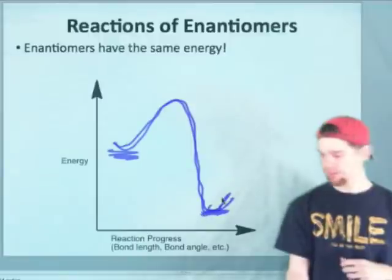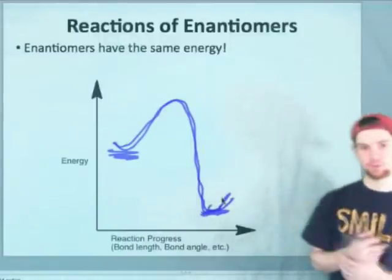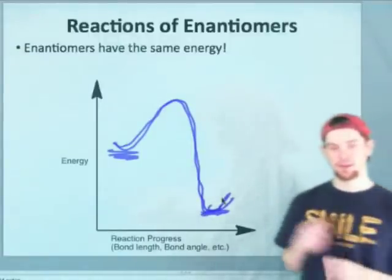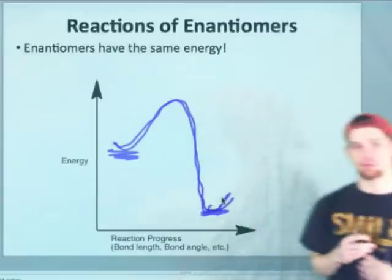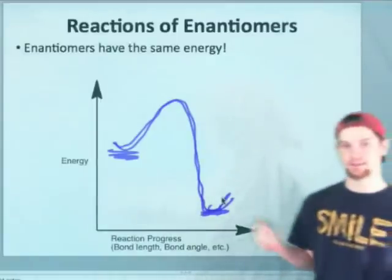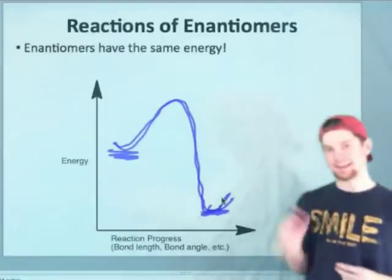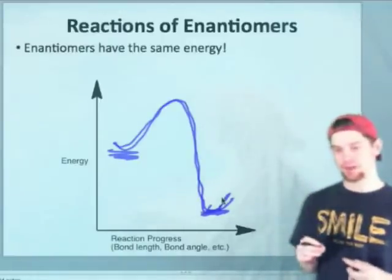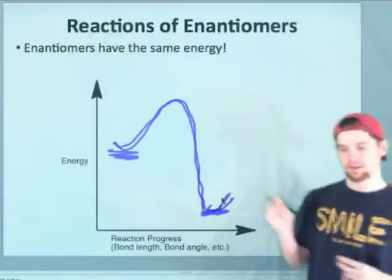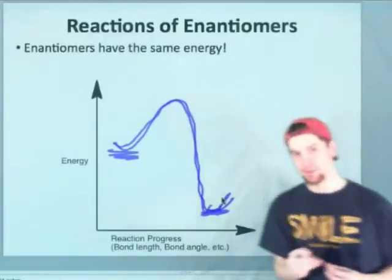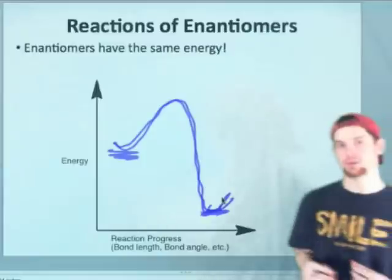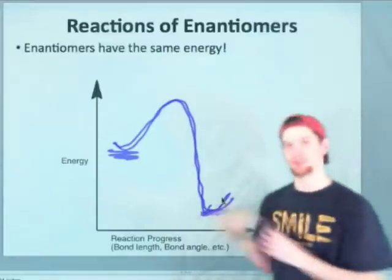So just to represent that, this would be, for instance, the SN2 reaction of two chiral bromides that are enantiomeric to one another with the same nucleophile. They would both exhibit the exact same reactivity profile because they are the exact same energy and they form enantiomeric products.